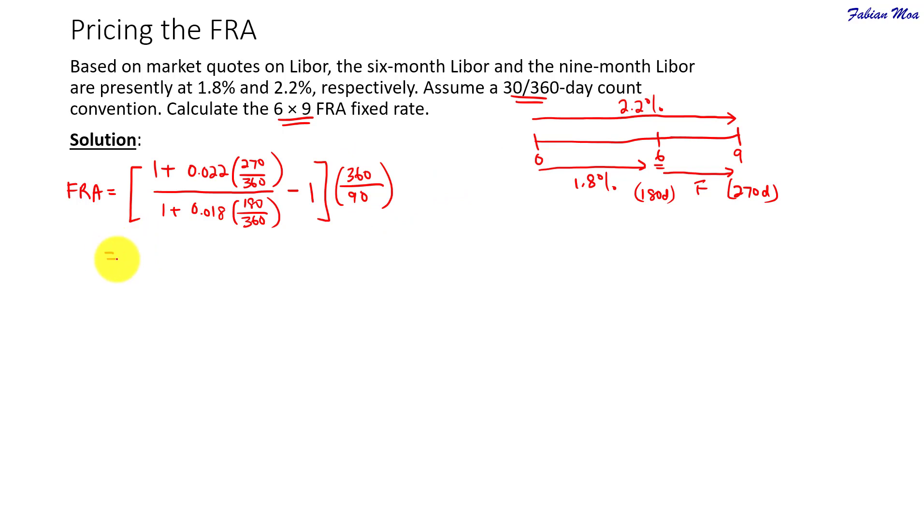So, when you calculate this, you will get the FRA rate per annum for the 3 months forward rate. So, you will get about 2.9732% per annum. Okay, so that's after we multiply by 360 over 90. But if you want the FRA rate per quarter, then of course you will not annualize the term here.